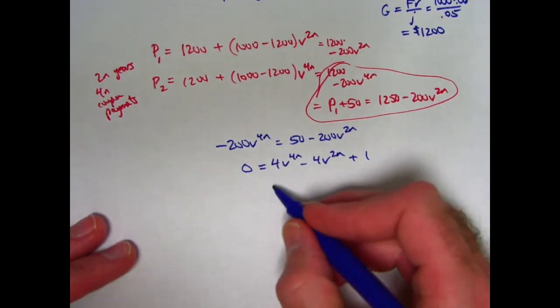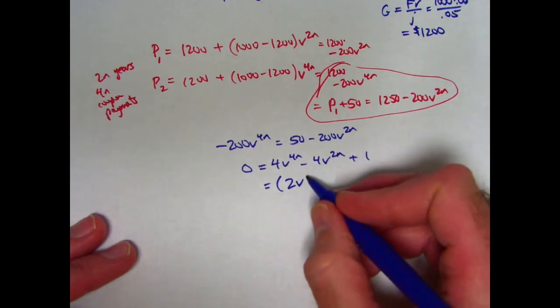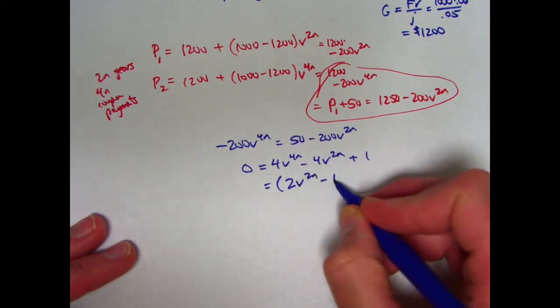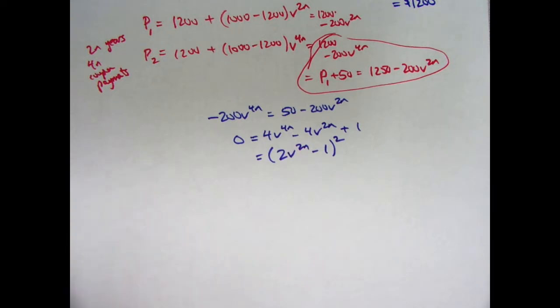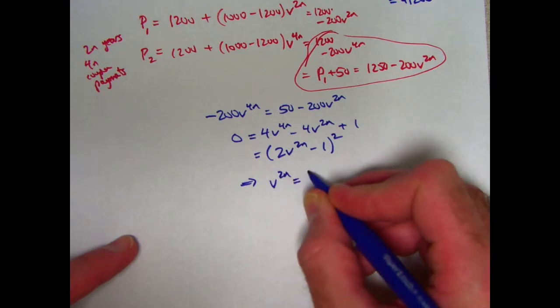You could use the quadratic formula, but this is pretty easily factorable. It's actually a perfect square. It's 2 times v to the 2n minus 1 quantity squared. Some people can see that quickly, and some people have trouble seeing that quickly. If you have trouble seeing that quickly, then just go ahead and default to the quadratic formula. V to the 2n ultimately must be 1 half.